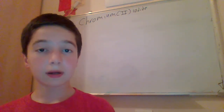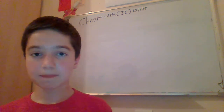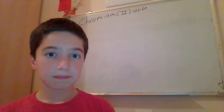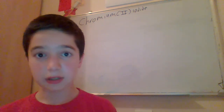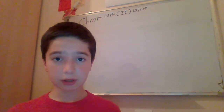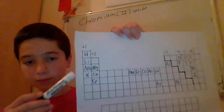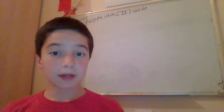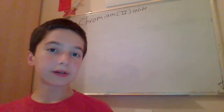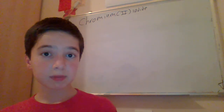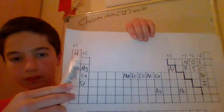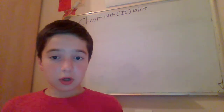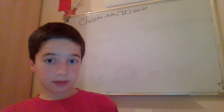In this video we're going to talk about writing ionic formulas with transition metals. When writing ionic compounds we normally look at the element in the periodic table and look at its charge. But when writing ionic formulas with transition metals, we just can't look at the periodic table and guess the charge of the transition metal. So how can we write ionic formulas with transition metals?